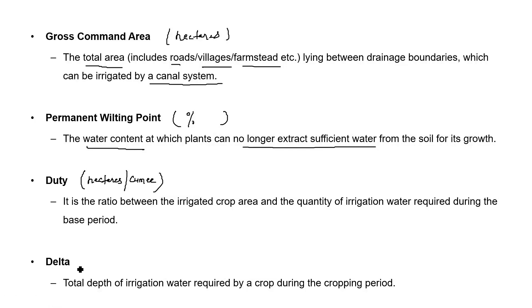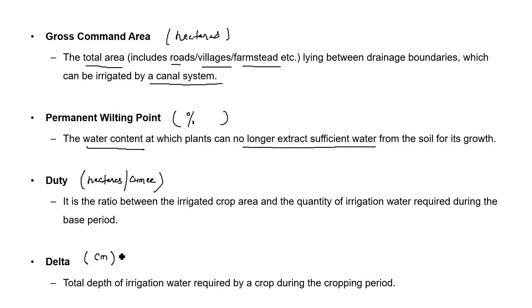The next parameter is delta. Delta is the total amount of water required for a crop during the cropping period. This amount of water is generally defined in terms of depth, typically expressed in centimeters.